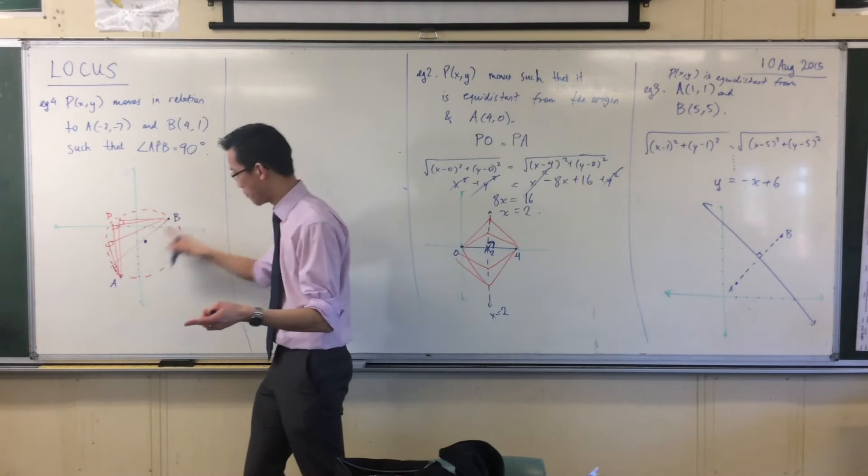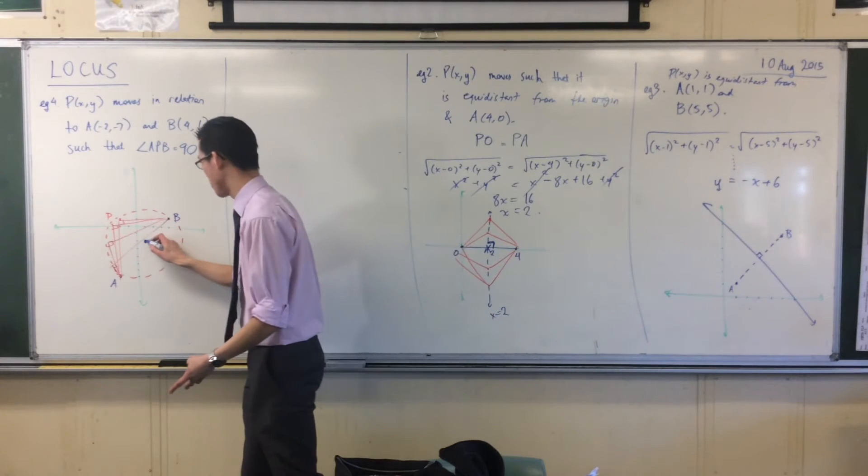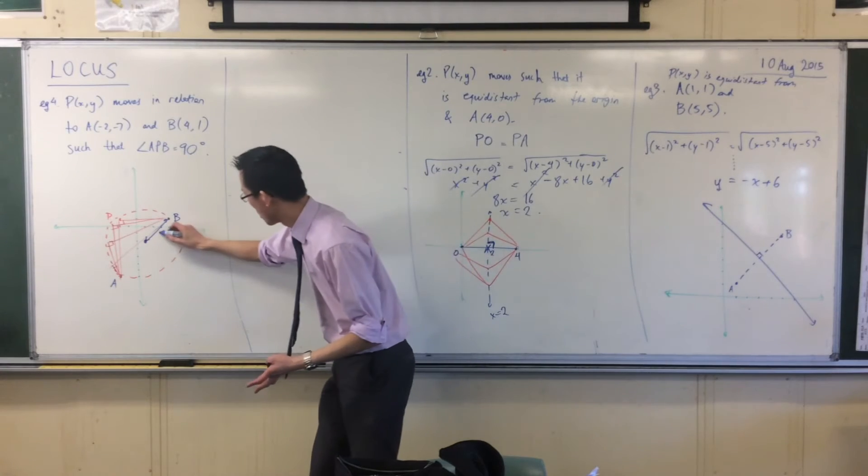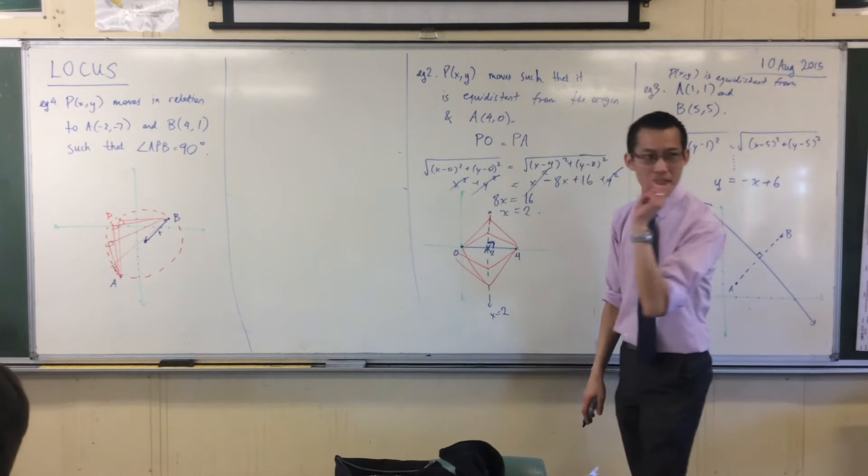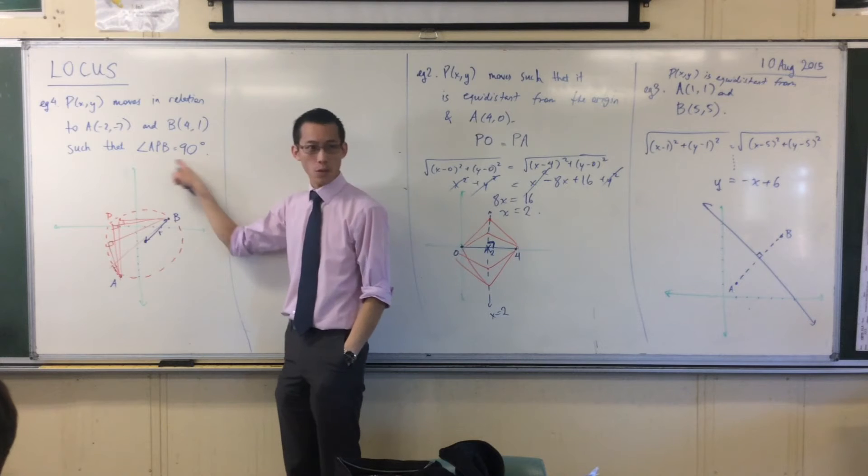I can find the coordinates here by doing midpoint AB. And then I can find the radius by going from here to here, or to A if you like, that'll give me the radius. That's fine, that's correct. There's a more direct way there. Have a look.